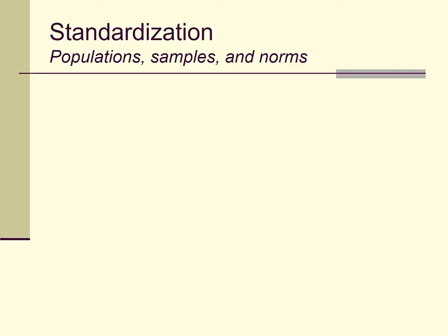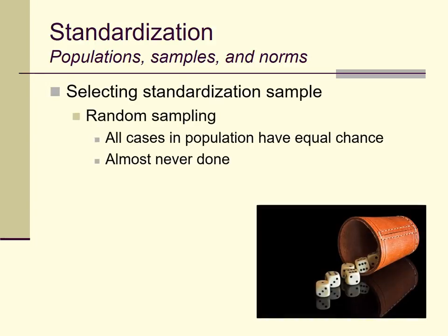If you've taken a research methods class, you've probably encountered the idea of random sampling — not to be confused with random assignment in experiments. Random sampling refers to the idea that if you're sampling from a population, you could, at least in principle, give every member of that population an equal probability of being drawn into your sample. You could find everyone, give each a number, and use a random number generator to select participants. This is relatively easy with plants or non-human animals, but in humans, it's really, really hard to do.